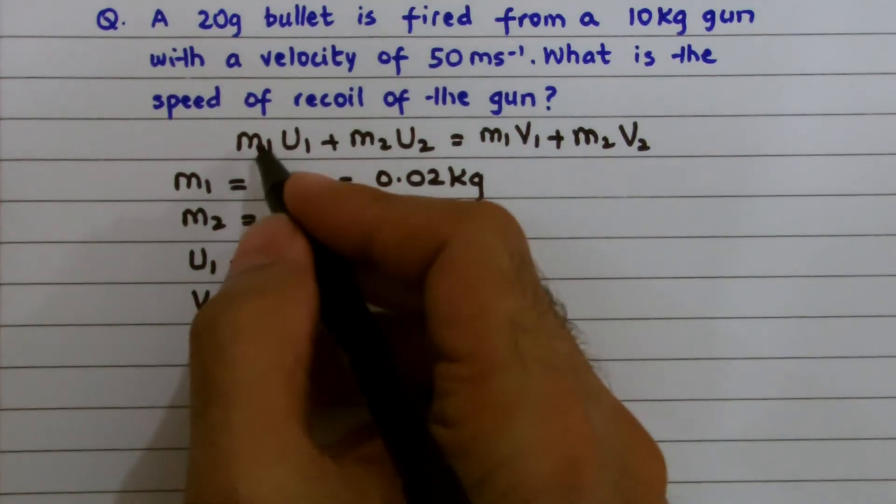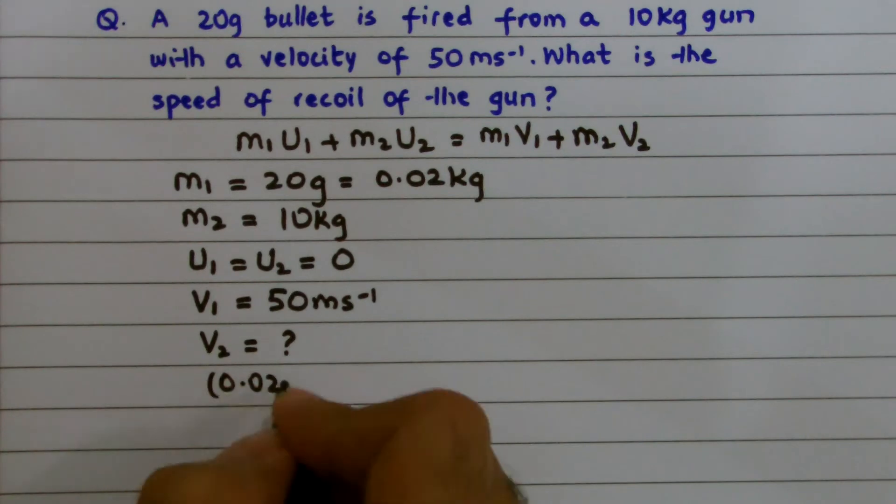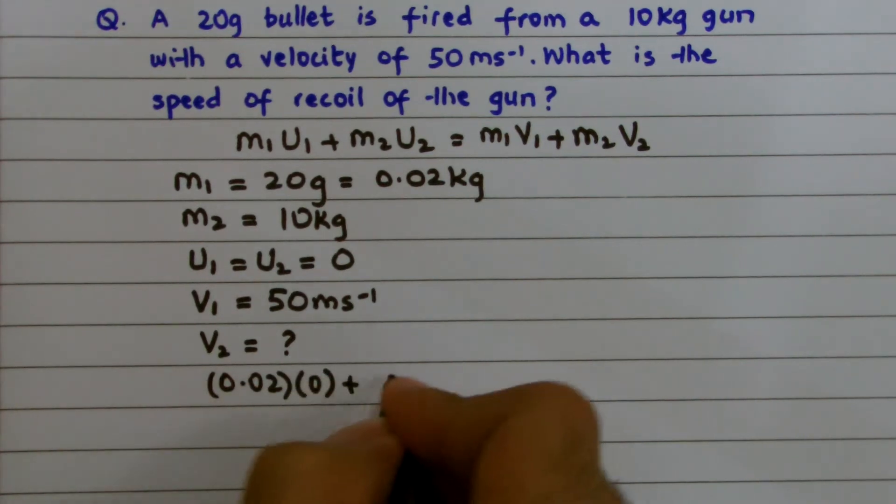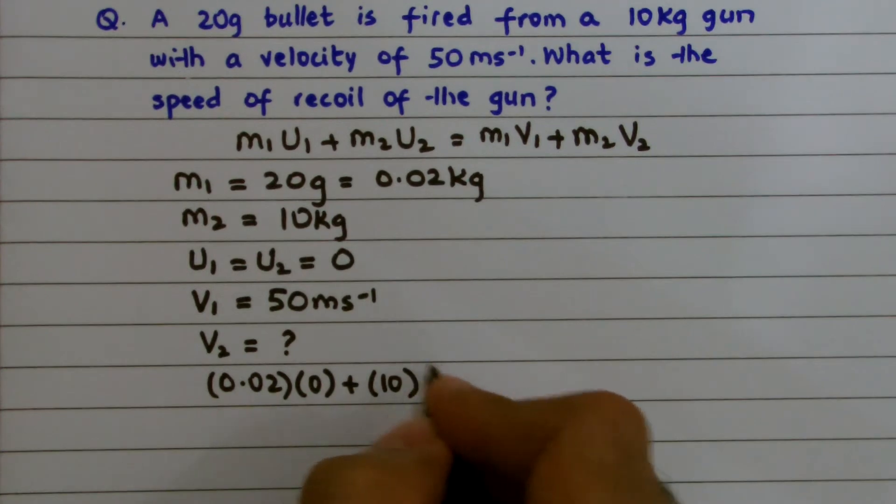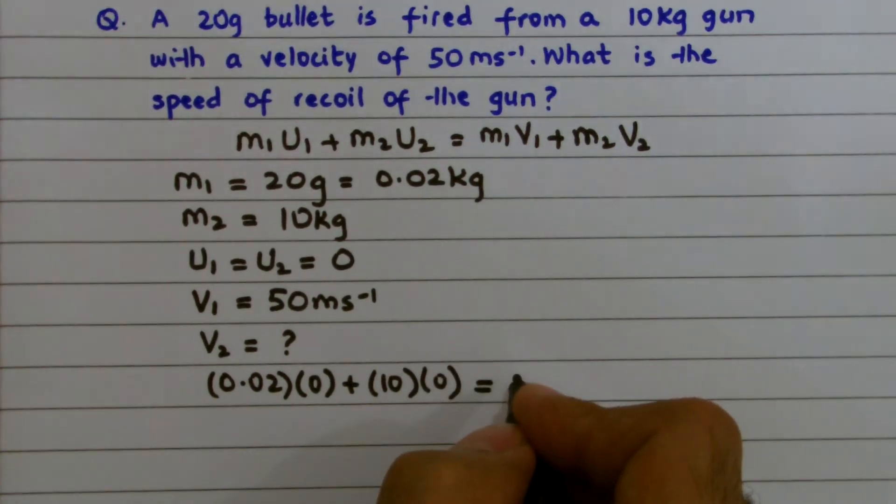We can get, if I put M1, that is 0.02 multiplied by 0, and M2, that is 10 multiplied by U2, that is again 0,